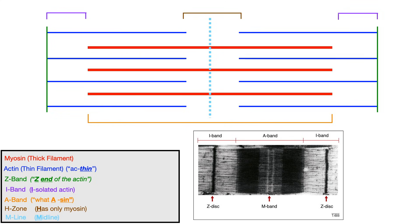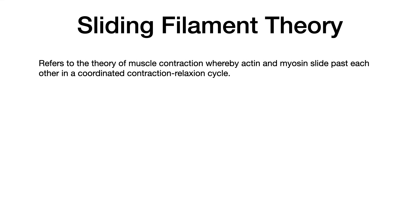So now that you understand the different components of the sarcomere, let's talk about some physiology. So there's this concept that you need to know called the sliding filament theory. Now, basically, this refers to the theory of muscle contraction, whereby actin and myosin slide past one another in a coordinated contraction relaxation cycle. Basically, actin and myosin proteins are latching onto one another, sliding past each other. And when the sarcomere contracts and telescopes and shortens and then elongates, that movement causes muscular contraction. So this is the leading theory on how muscle contraction works. And it's got four different stages: attachment, power stroke, release, and cocking. We're going to walk through these stages one at a time and conclude this video by talking about the muscle physiology here and how all of this works.